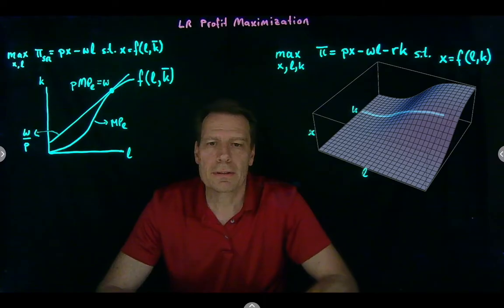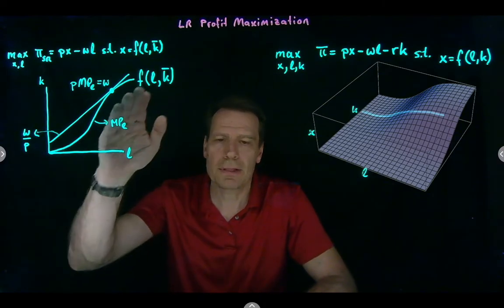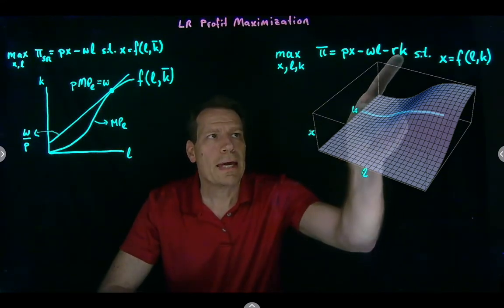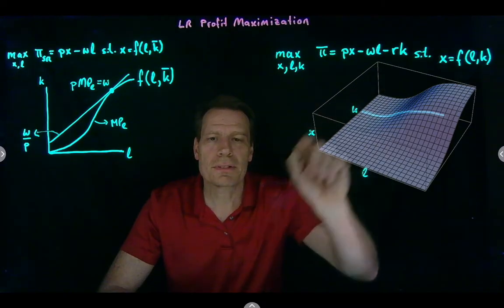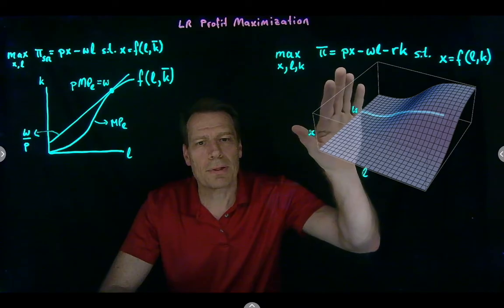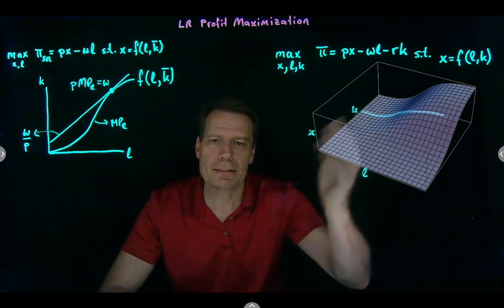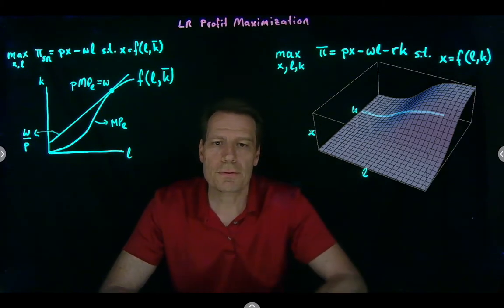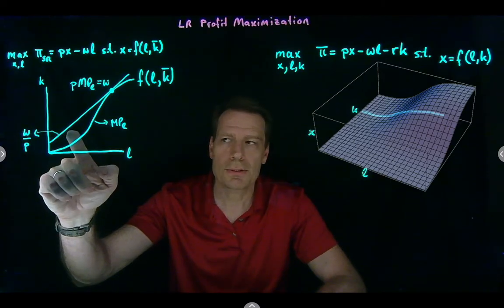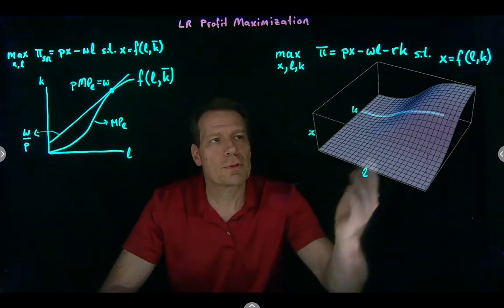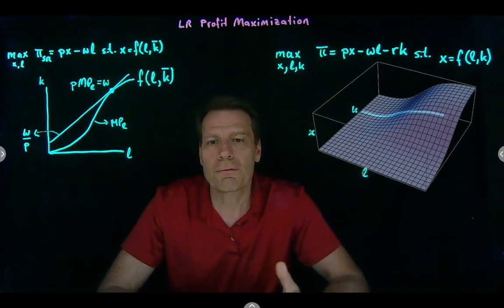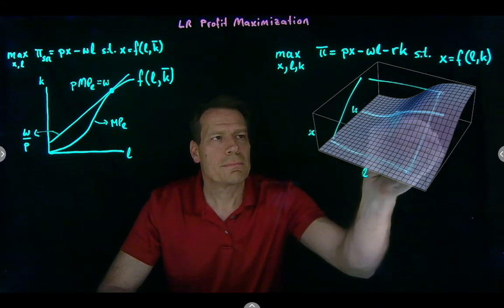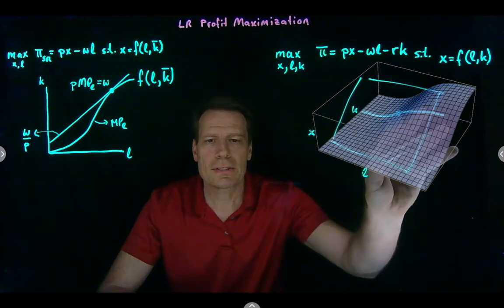The short run profit equation gave us the equation of a line — a profit line — and the higher the profit, the higher that line would sit in our picture. When we add the capital cost term, the equation becomes the equation of a plane. You can imagine a sheet of paper sitting in this space, with lots of these sheets — one for each profit level — and the firm tries to reach the highest possible profit sheet, forming a tangency with the production function.